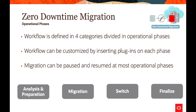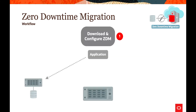The migration uses four different workflow phases. It starts with analysis and preparation, where we try to understand the source database environment and gather all the information. Then we work on the migration, followed by switchover and finalization — where, if migration is successful and you are satisfied, you proceed with connecting your applications to the new platform. To start the first phase, you download and configure ZDM for your on-premises server and gather all required information about your migration.